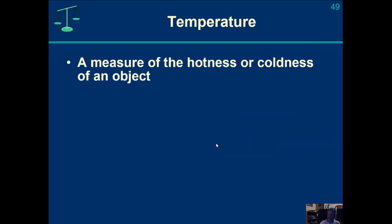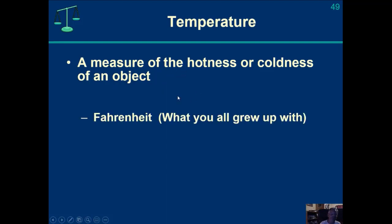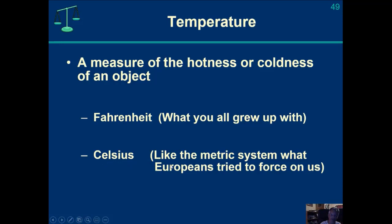Temperature — it's a measure of the hotness or coldness of an object. We need a temperature scale to measure it. Fahrenheit is what you grew up with in the United States. If you were in Europe, you probably grew up with centigrade or Celsius. In science, you need to be comfortable with Celsius — you will rarely use Fahrenheit. Most of the time, if you see Fahrenheit, you'll be asked to convert it into Celsius and then to the SI unit for temperature, which is the Kelvin scale — the absolute temperature scale.